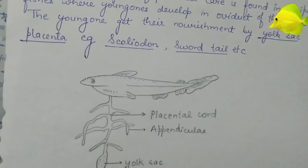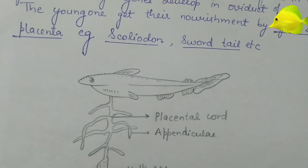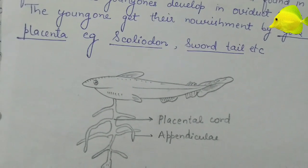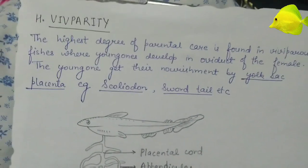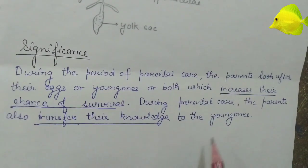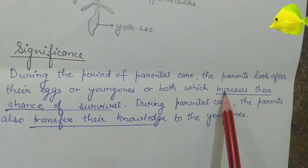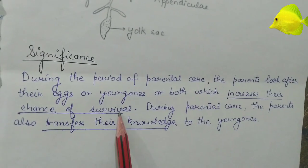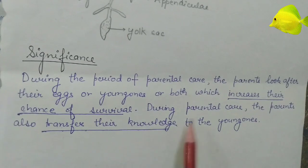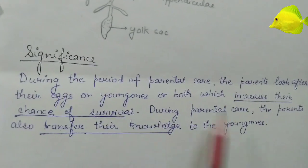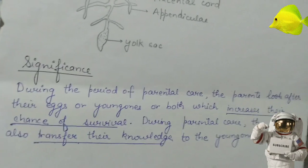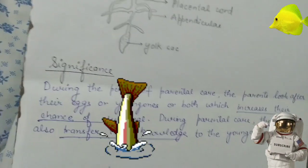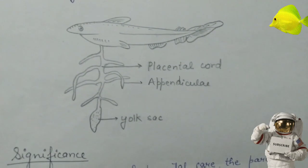So we have seen there are many methods of parental care: formation of nest, mouth breeders, coiling around eggs, developing brood pouches, integumentary cups, attachment to body in Kurtus, mermaid purse, and viviparity. The significance of parental care is that it increases the chances of survival of offspring and allows parents to transfer knowledge to their young ones. Thank you, please like, subscribe, share, and comment.